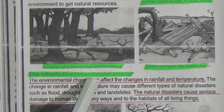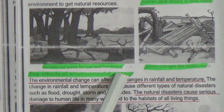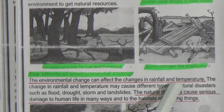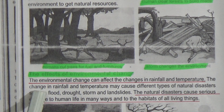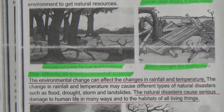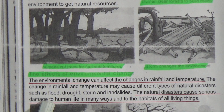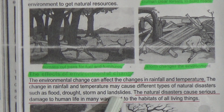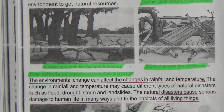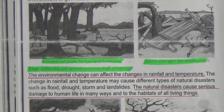Next topic: The Effect of Environmental Change. Environmental change can affect changes in rainfall and temperature. The change in rainfall and temperature may cause different types of natural disasters such as flood, drought, storm and landslides. Natural disasters cause serious damage to human life and to the habitats of all living things.